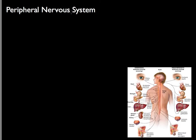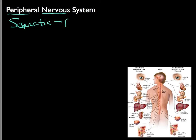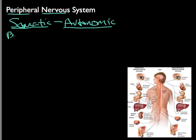The peripheral nervous system breaks down into somatic and autonomic. One way students can remember autonomic easily is to think 'automatic' — it's self-regulation. Somatic is voluntary — think 'body,' then think 'voluntary.' Autonomic is automatic, and that leads to self-regulation.